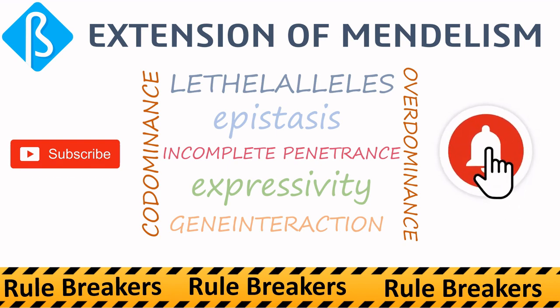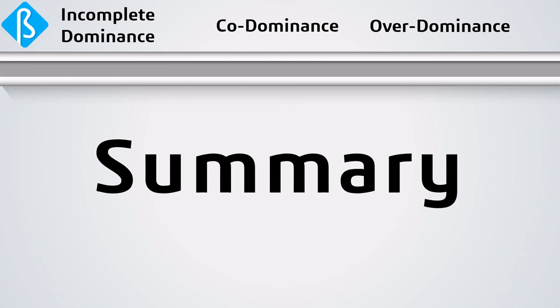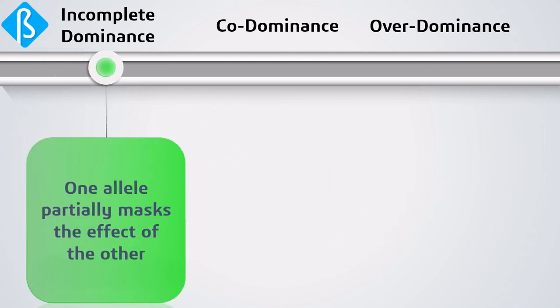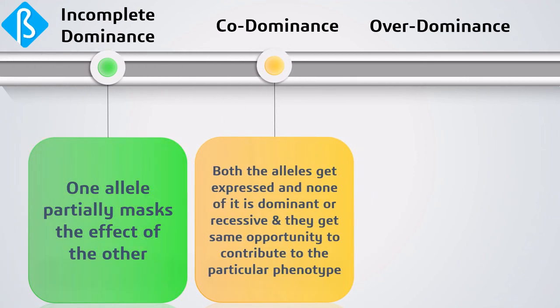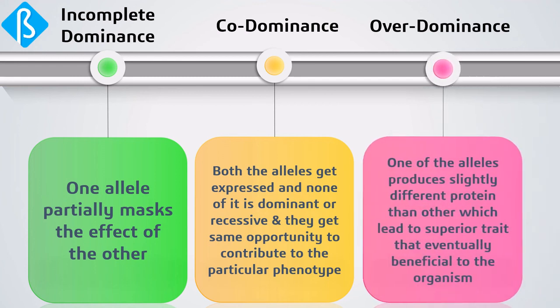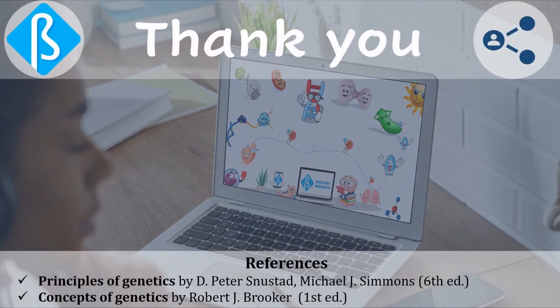As a quick summary: incomplete dominance is when one allele partially masks the effect of the other. In co-dominance, both alleles are expressed and neither is dominant or recessive — they have equal opportunity to contribute to the phenotype. In over-dominance, one allele produces a slightly different protein than the other, leading to a superior trait that is beneficial to the organism. Thank you for watching — see you in the next lecture.